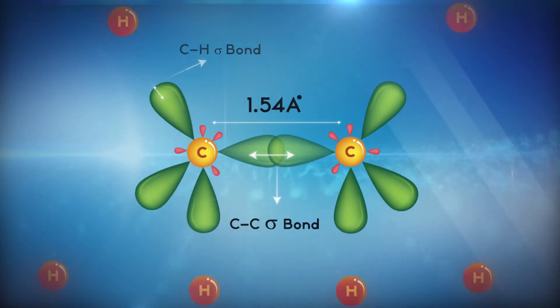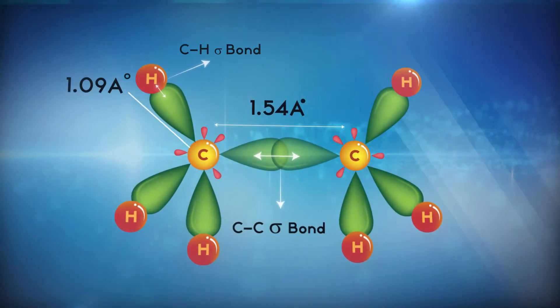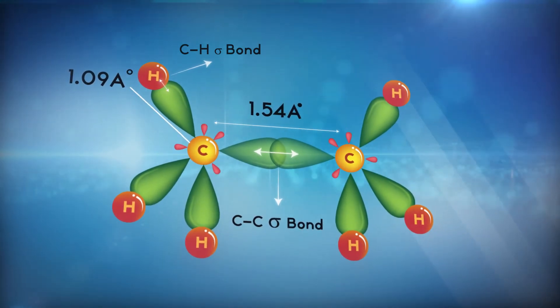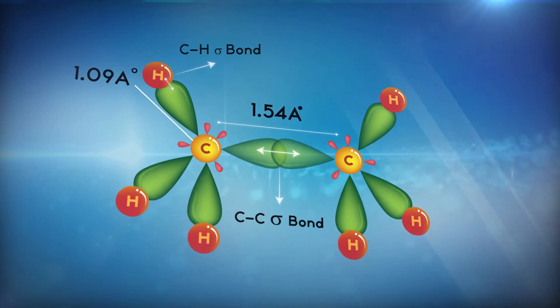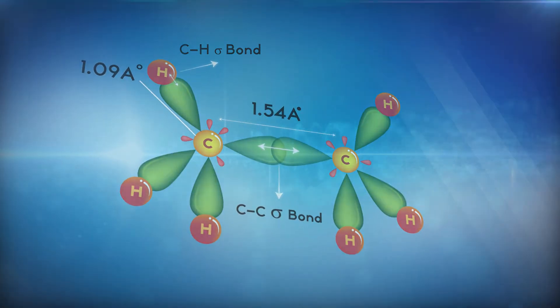But here a question arises: how are these sp3 hybrid orbitals formed? To explain this mechanism, let us consider an ethane atom.